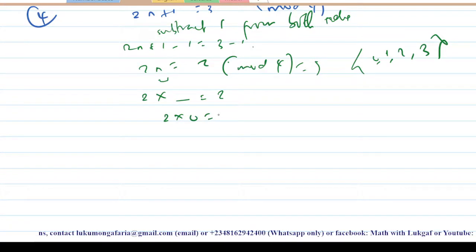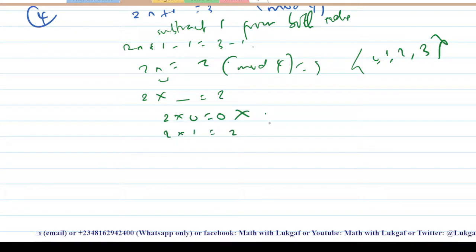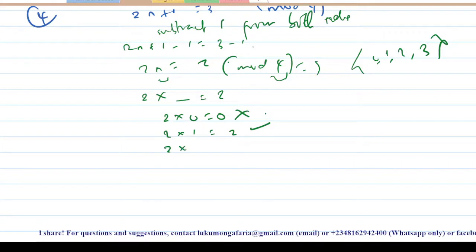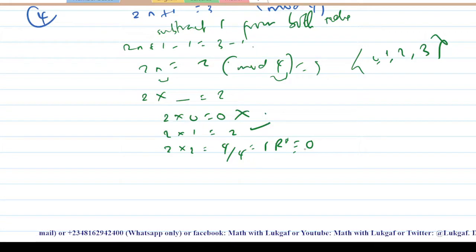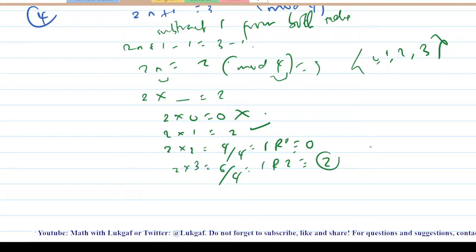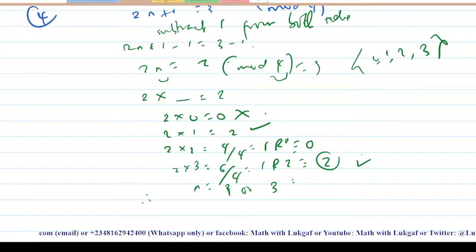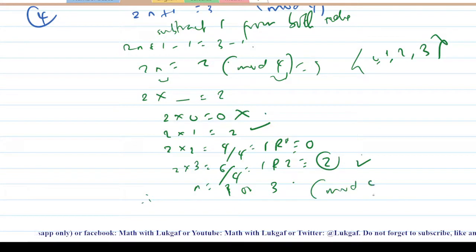2 times 0 is 0 — not 2. 2 times 1 is 2 — that works, so n equals 1. But since we are in a non-prime modulo, we must not stop and must check the rest. 2 times 2 is 4; modulo 4 gives 0 — not 2. 2 times 3 is 6; modulo 4 gives remainder 2 — that works too! So n equals 1 or n equals 3.